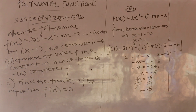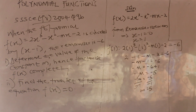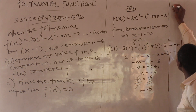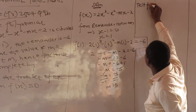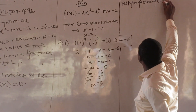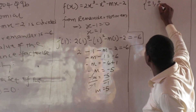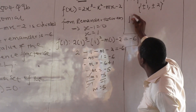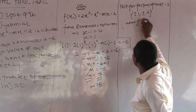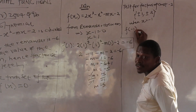Now determine the value of the constant n. Hence, factorize f(x) completely. To do that, I have to use the factor theorem — test factors of the constant. What is the constant? It's minus 2. So you test plus or minus 1, plus or minus 2. Let's see when x equals minus 1.